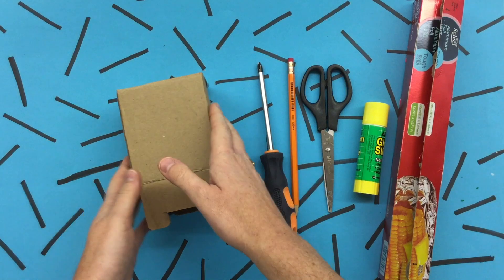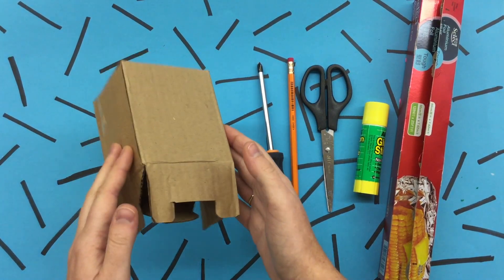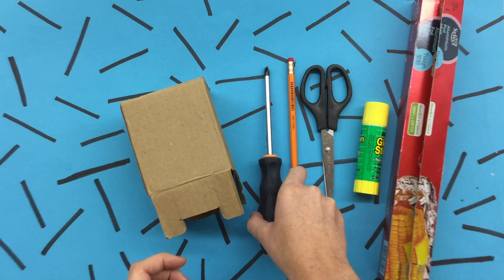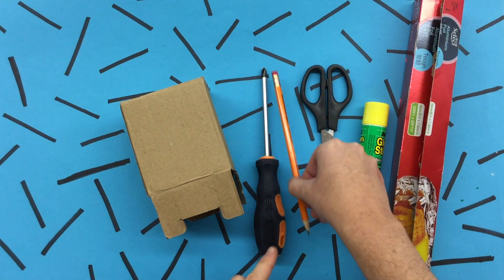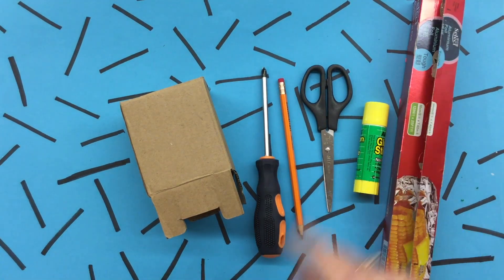Okay artists first start by getting a box. Make sure it fits over your head. I'm only using a teeny tiny box so you can see the demonstration a little more clearly. You may need a screwdriver or a sharp pencil. One or the other. Some safe scissors, glue, and some tin foil.